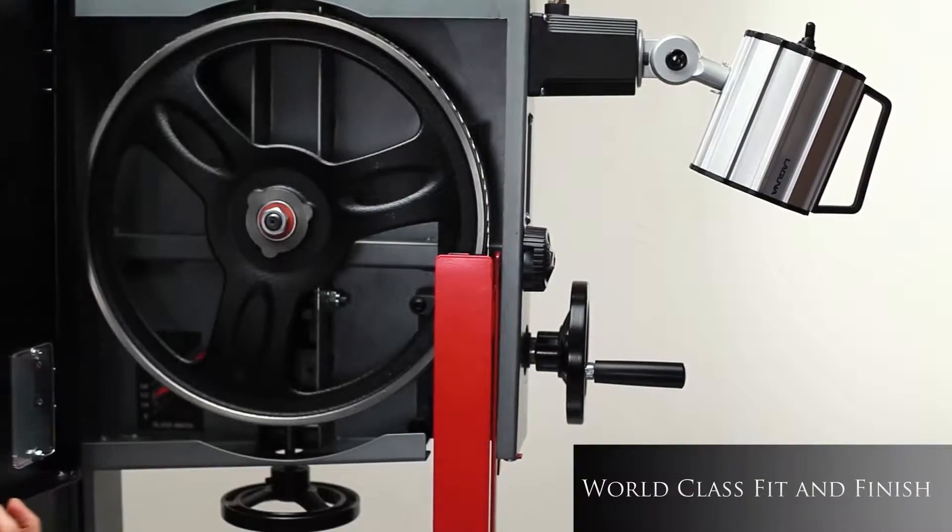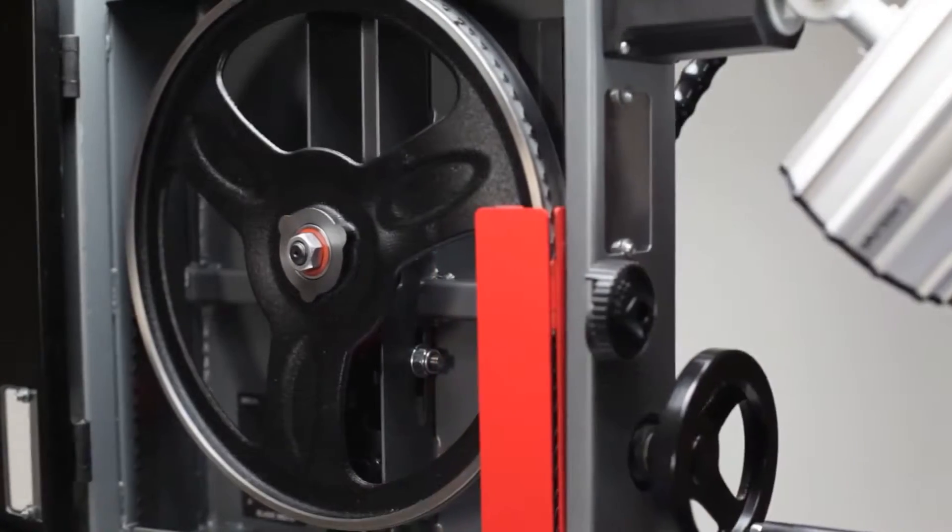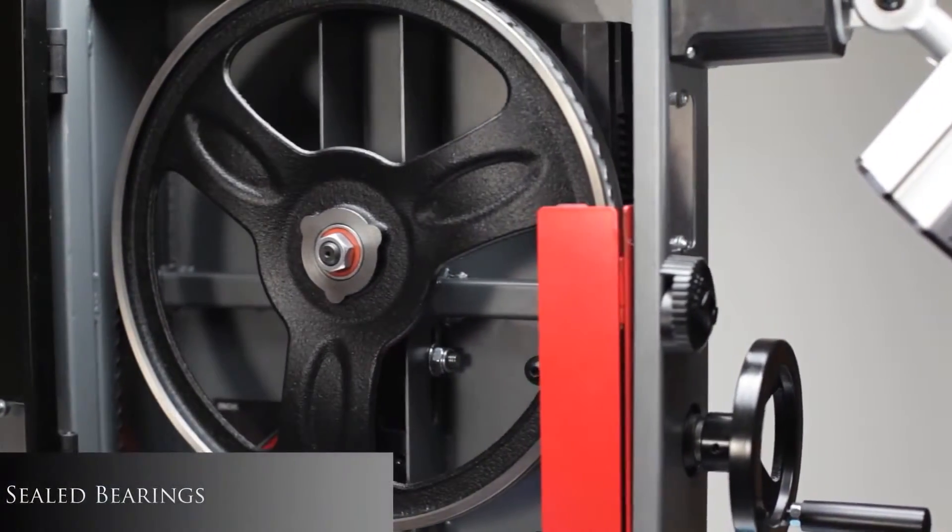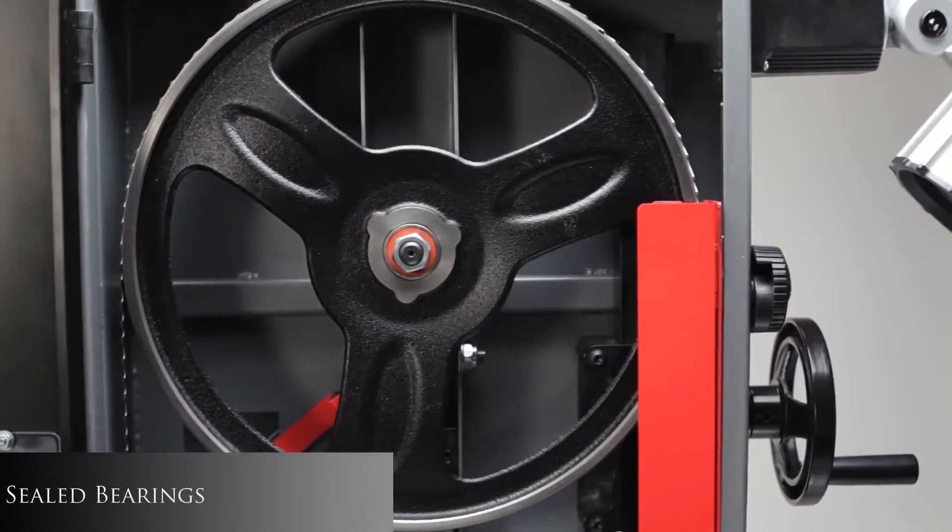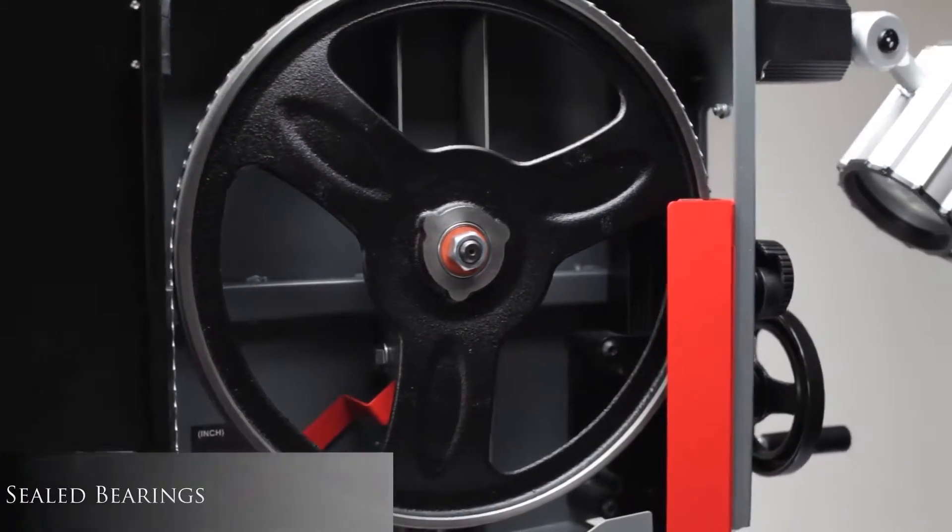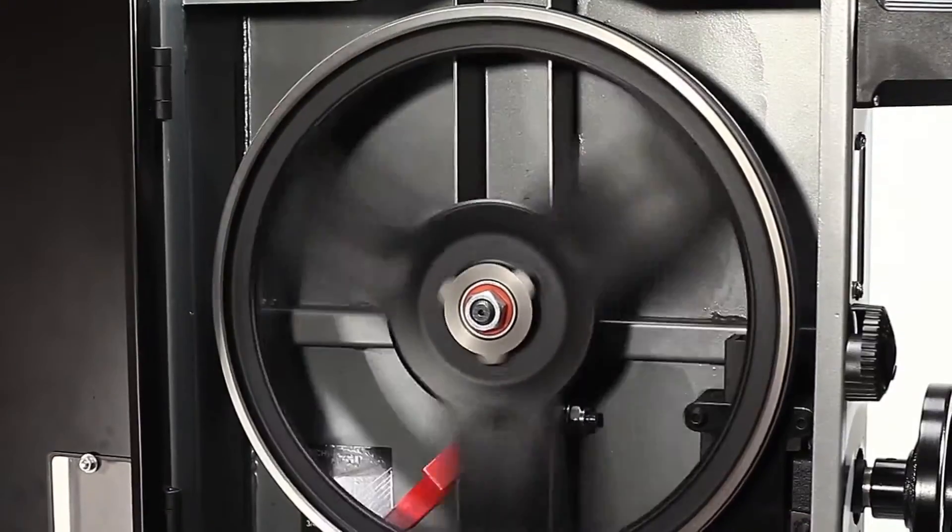Dynamically and electronically balanced cast-iron wheels ensure vibration-free performance. The wheels are fitted with sealed bearings and covered by a single-piece snap-on polyurethane tire.